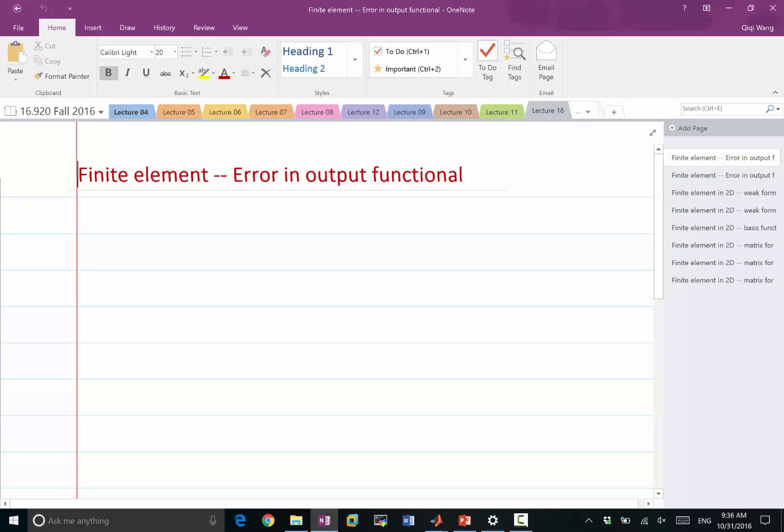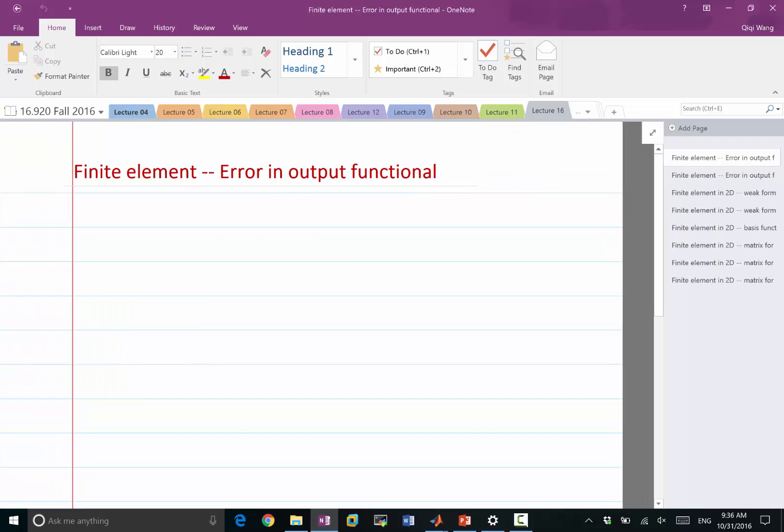All right, last lecture we discussed how to estimate the error in finite element solutions. How much error was caused by limiting the space of solution from the infinite dimensional space in the weak form of the differential equation to a finite dimensional space, which we can represent as a linear combination of a few basis functions and derive a set of algebraic equations for the linear combination coefficients.